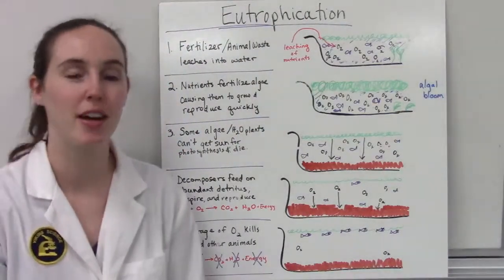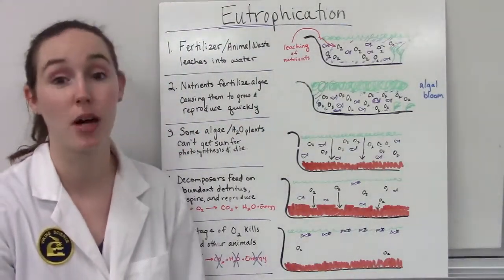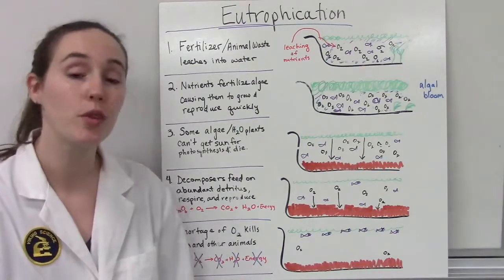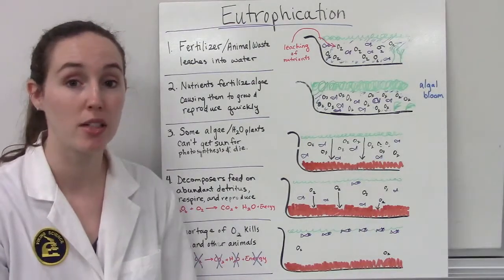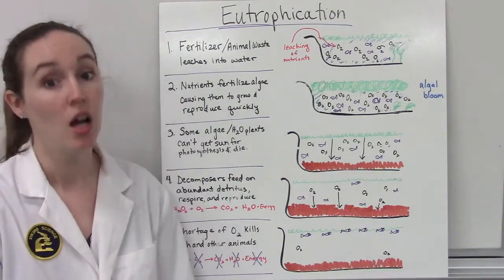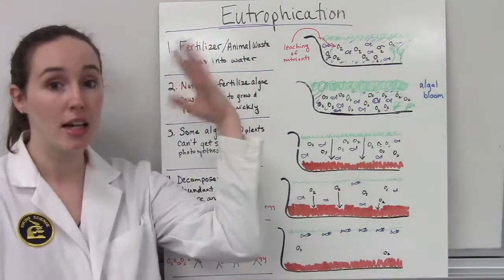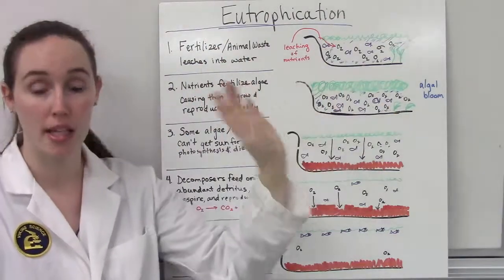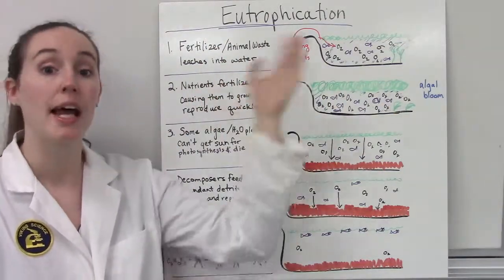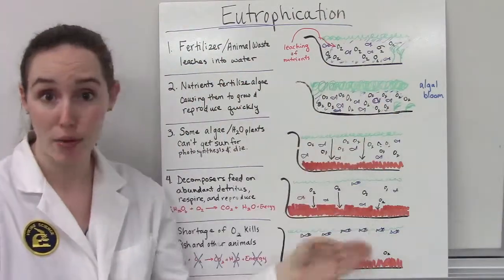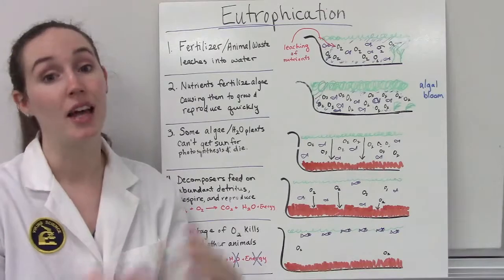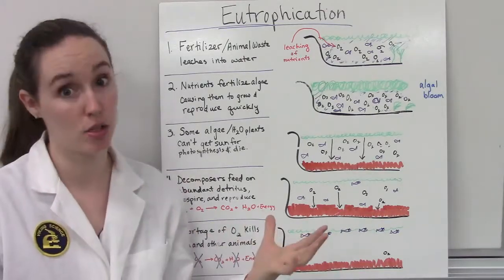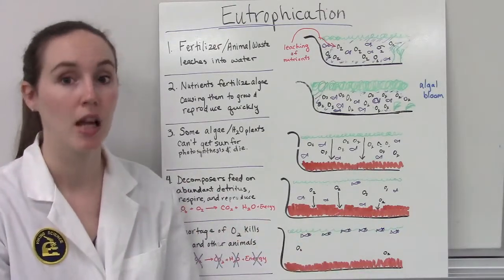Hi, it's Ms. Parrott and this video is about eutrophication. Eutrophication is the process by which fertilizers and animal waste run off into aquatic ecosystems and cause a cascade of events that can ruin and highly disrupt an aquatic ecosystem.